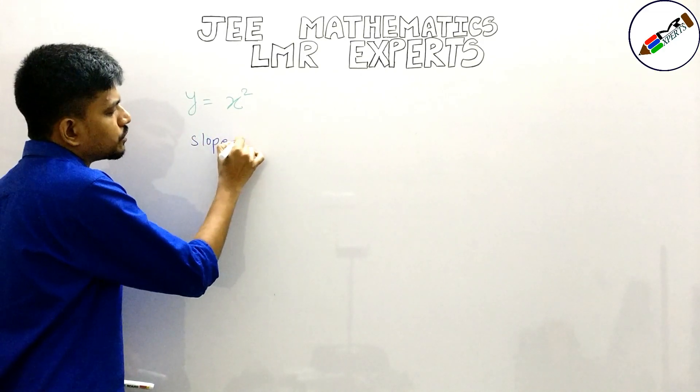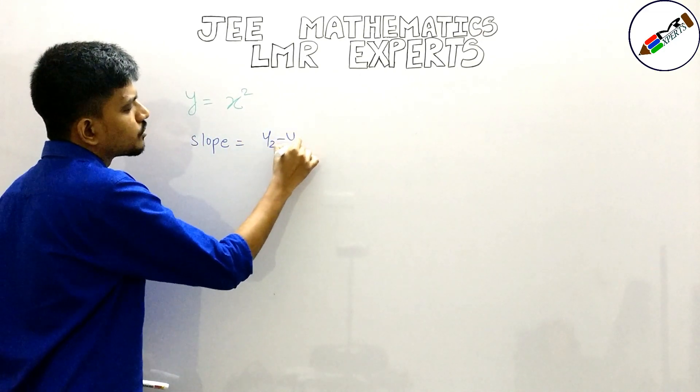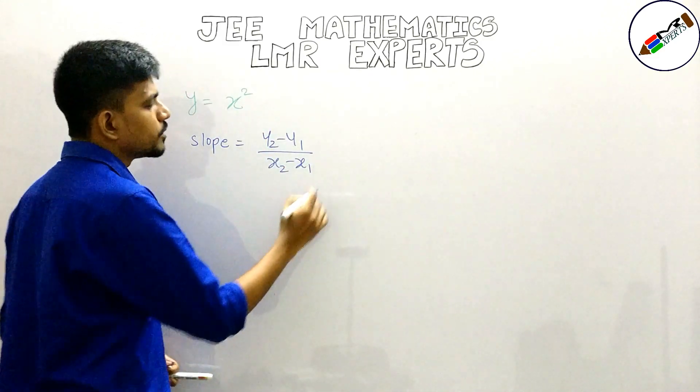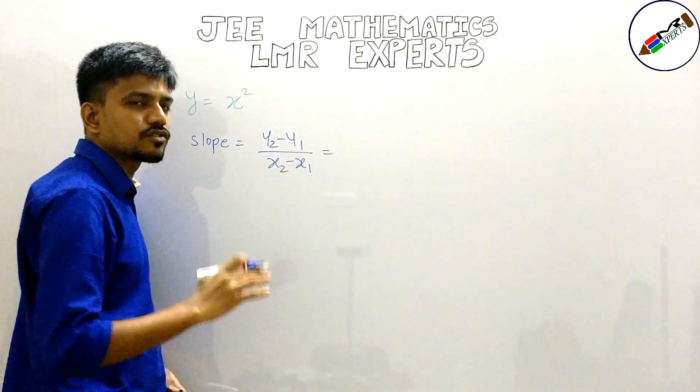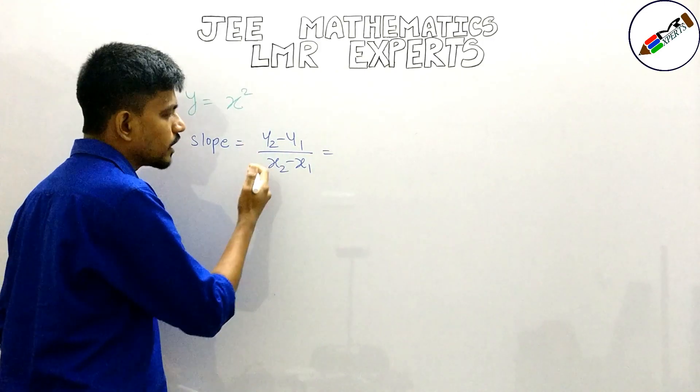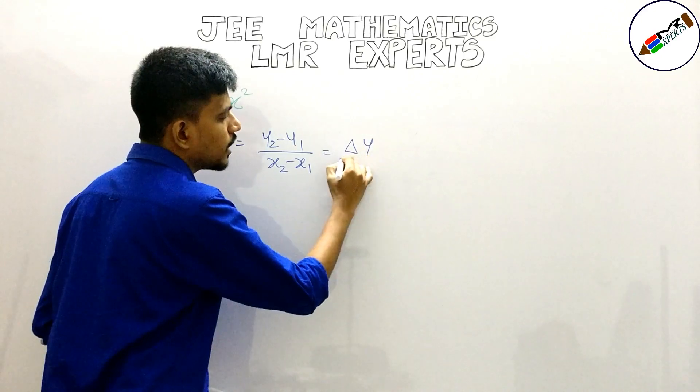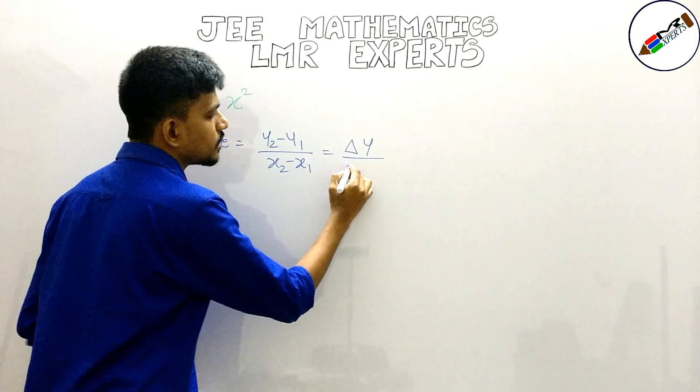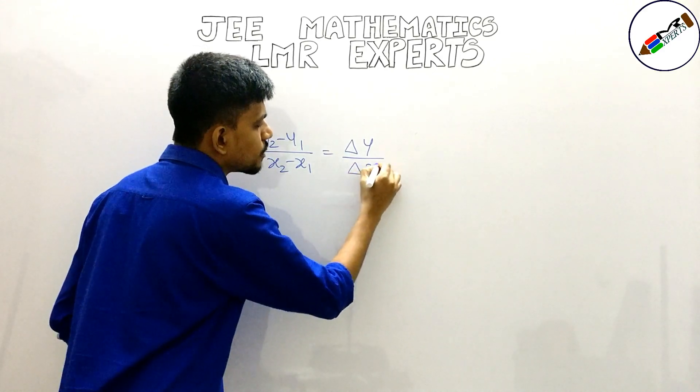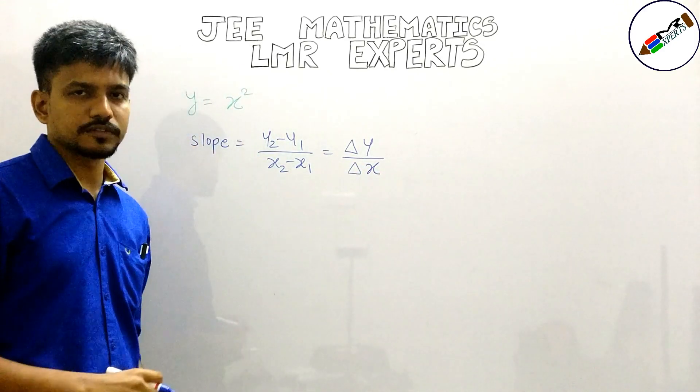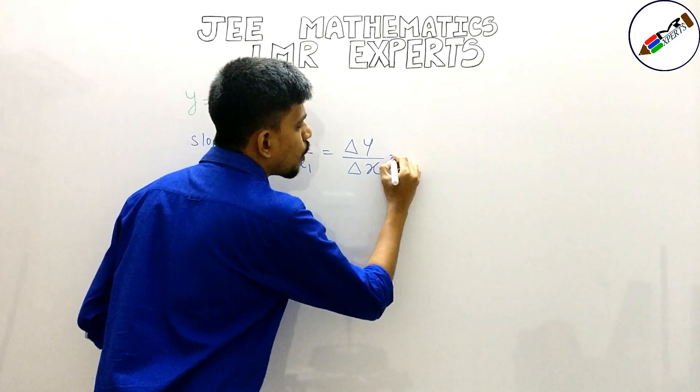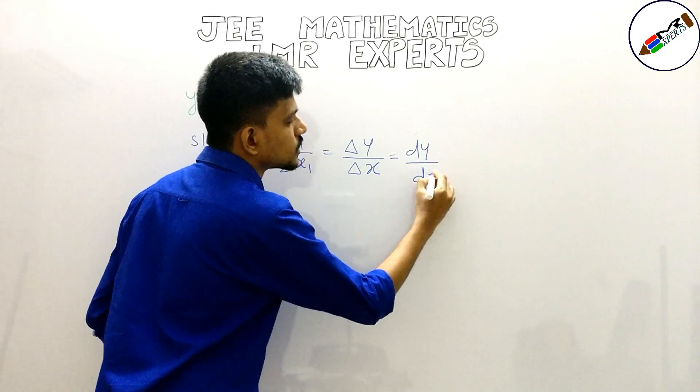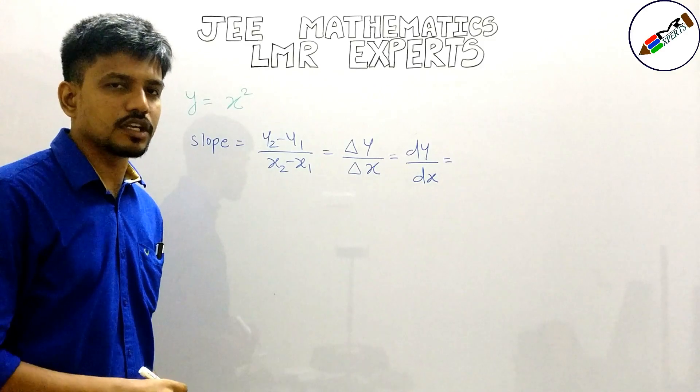Slope is equal to y2 minus y1 upon x2 minus x1. The same could be written as y2 minus y1 is the difference between y coordinates. I can write it as delta y. Delta represents the actual difference between the y coordinates. x2 minus x1 represents the difference between x coordinates. Now for small differences, I can also denote it by dy by dx. As in the earlier video, we have already seen it.